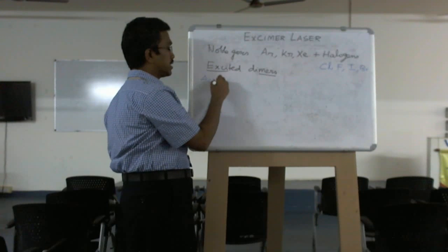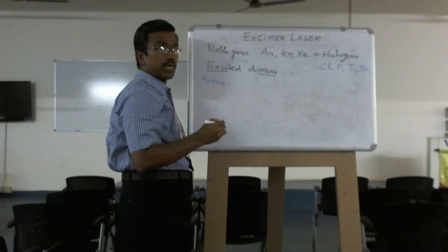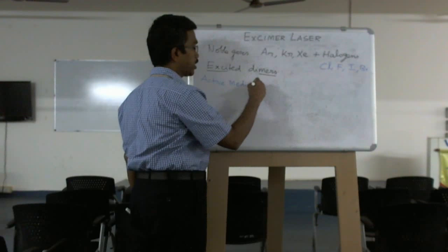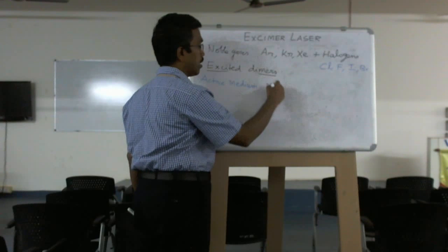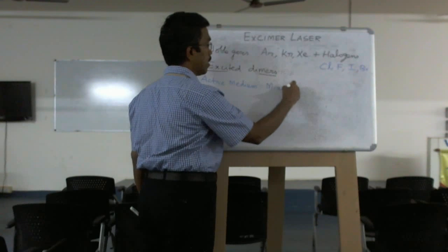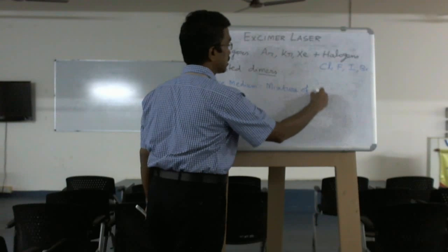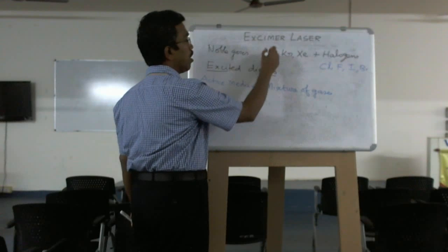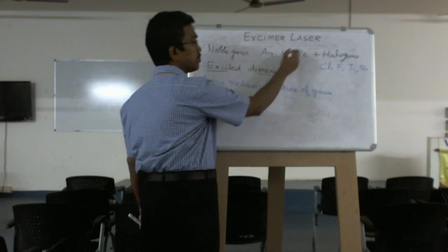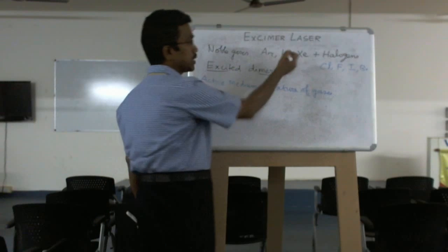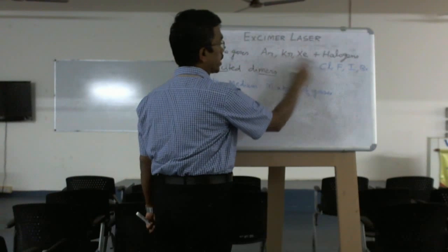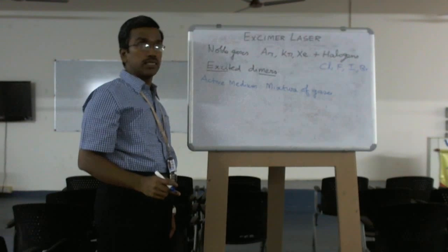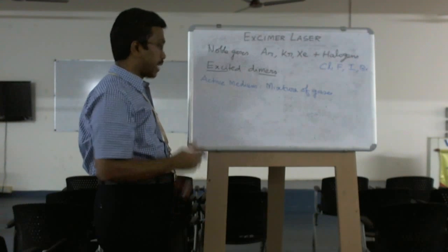Any type of laser should have three major components. One is called active medium. Here, active medium is the mixture of gases or dimers - dimers means argon 2, krypton 2, or argon chloride, krypton fluoride, krypton iodide, like that - which are called excimers.